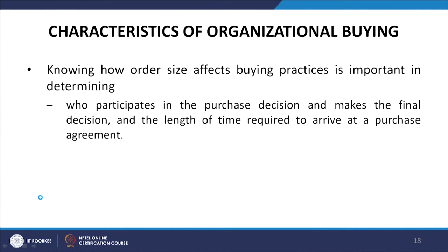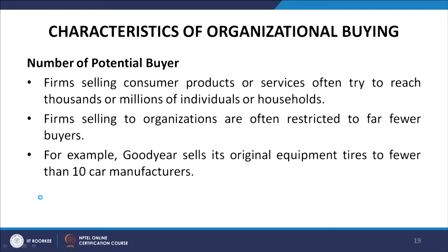Knowing how order size affects buying practice is important in determining who participates in the purchase decision, who makes the final decision and the length of time required to arrive at a purchase agreement. Firms selling consumer products often try to reach thousands or millions of individuals, whereas firms selling to organizations are restricted to far fewer buyers. For example, Goodyear sells its original equipment tires to fewer than 10 car manufacturers.